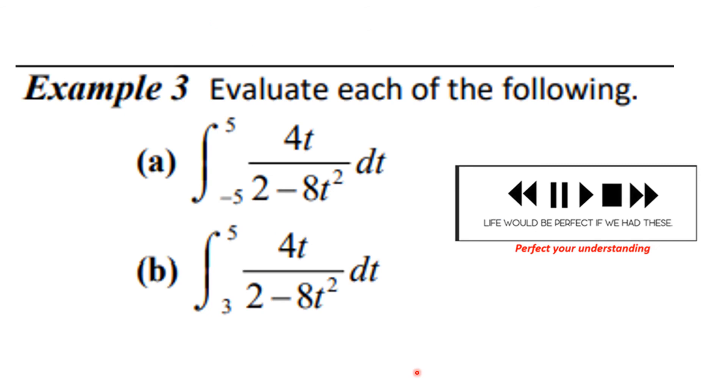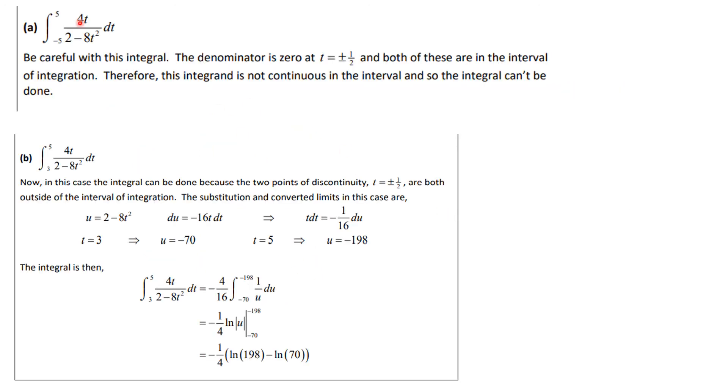Now here's two more problems you should do. You know what to do. Let's see how you did. Well, you can't do this integral because the denominator is 0 at two spots, and both of those are in the interval of integration. The integrand is not continuous, and so the integral cannot be done. Now this one goes from 3 to 5, and neither one of those places where the denominator is 0 are there, so we can do this.